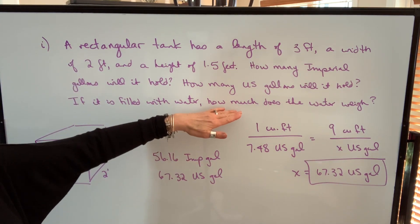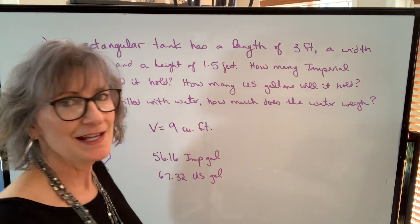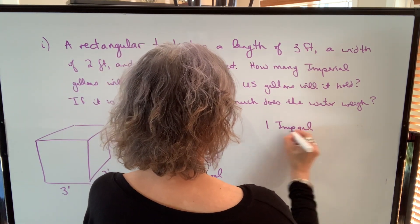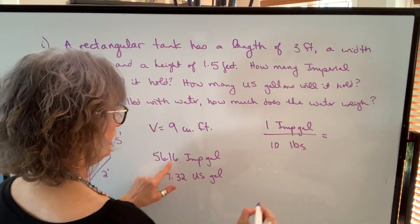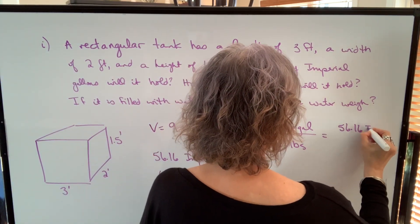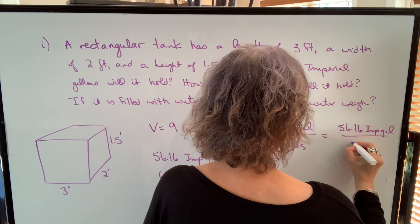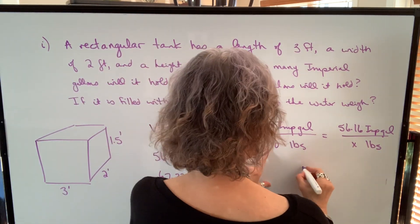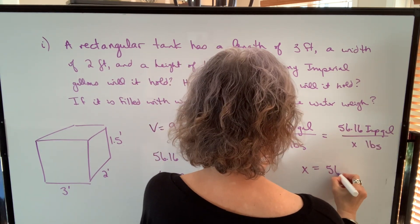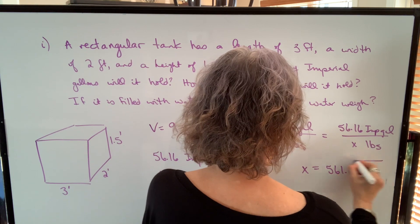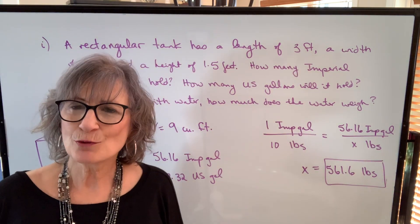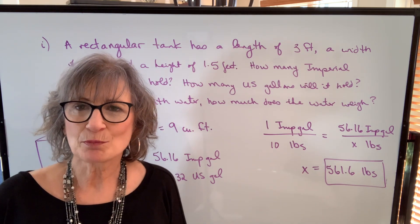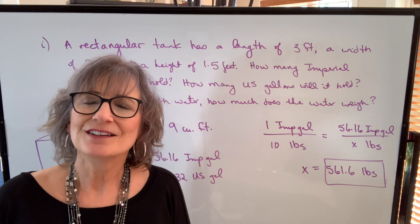And the last question says, how much does the water weigh? Let's use the easiest interrelationship, and that is one Imperial gallon is 10 pounds. So if I have 56.16 Imperial gallons, I'm going to be able to find the weight. I cross multiply. 1 times x is x. 10 times 56.16 will be 561.6. So that's how much that amount of water will weigh. These questions aren't easy because these numbers are not nice, even numbers to work with. But if you use direct proportion and let your calculator do the work for you, it shouldn't be too bad.